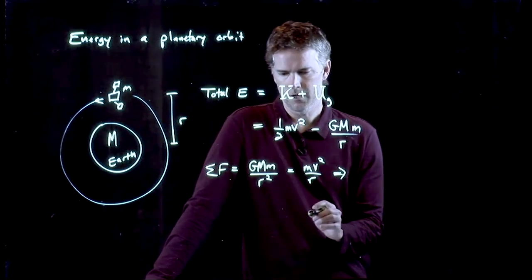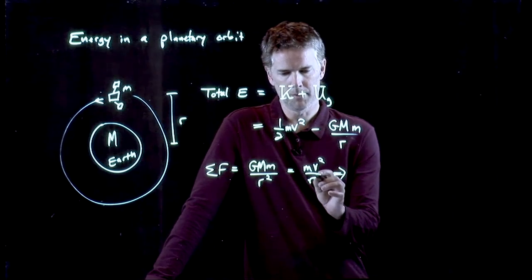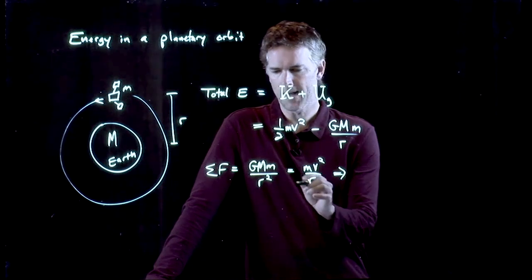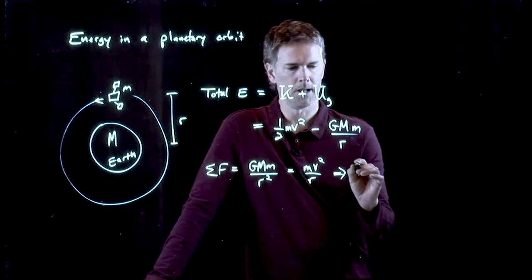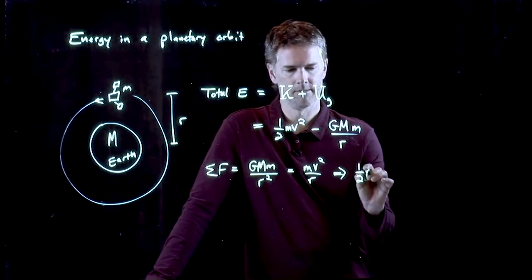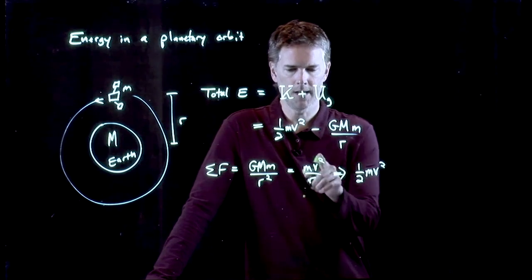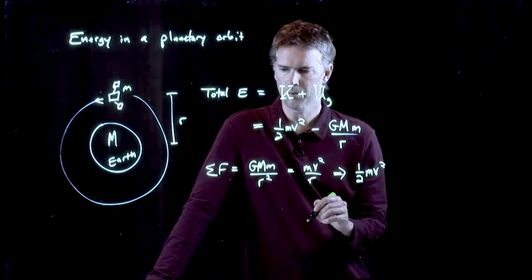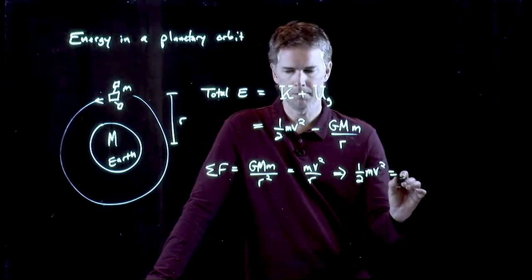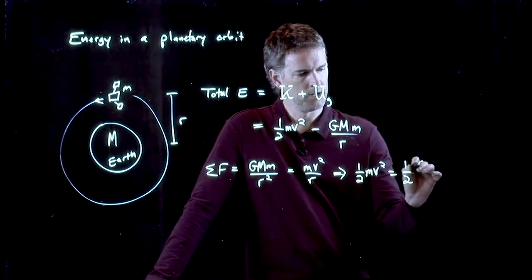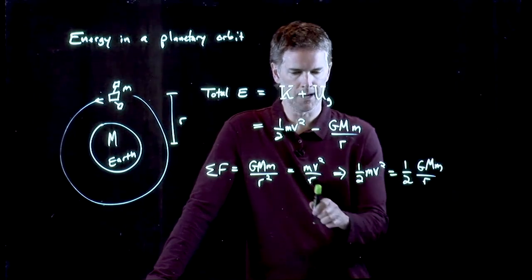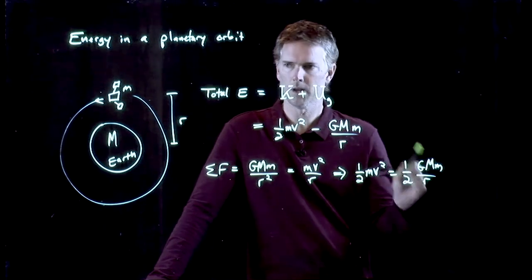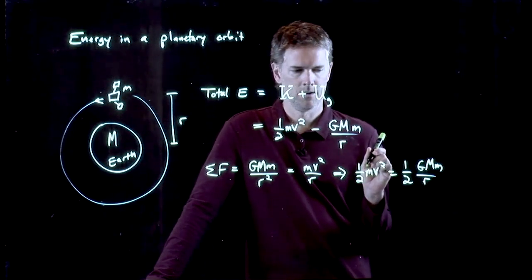All right. What do we do? Well, let's multiply both sides by an R. We'll get rid of that R. And we'll get rid of one of those. And then let's multiply both sides by a half. And if I do that, this side becomes one half MV squared. And the other side becomes one half GMM over R. Remember, we got rid of one of the R's, so we just have one left. Aha!